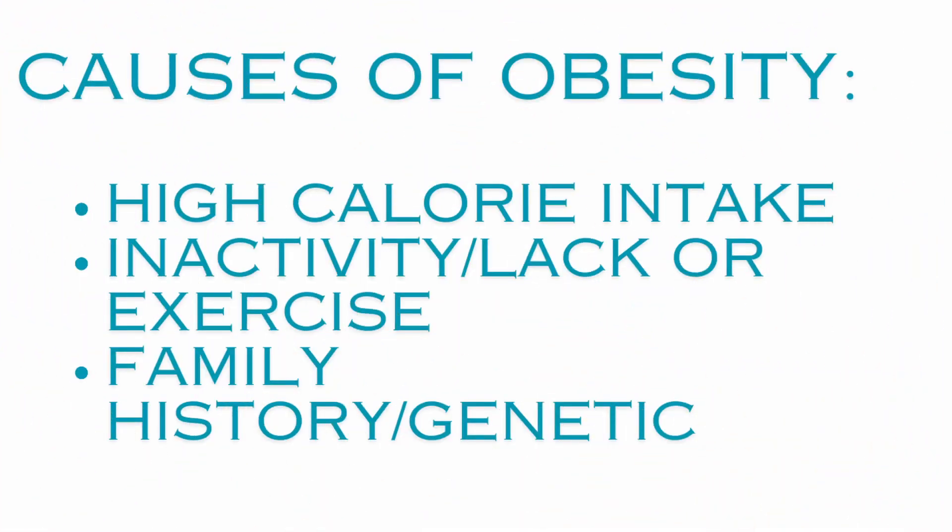Other important factors include family history — having a family history of obesity gives you a higher risk of developing it yourself. This includes both genetic risk and social lifestyle factors, such as eating more and consuming foods high in carbohydrates and low in nutrients like fruits and vegetables.